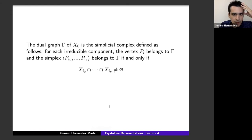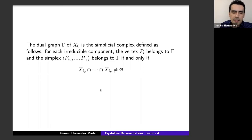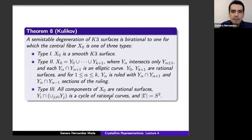The dual graph of the special fiber is a simplicial complex defined as follows: for each irreducible component we put a vertex, and a simplex generated by some of them belongs to the complex if and only if the intersection of the respective components is non-empty. This definition is needed to state the big theorem of Kulikov.